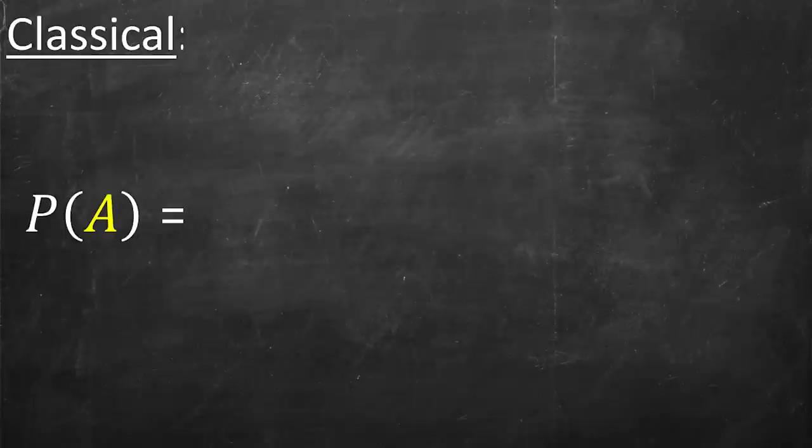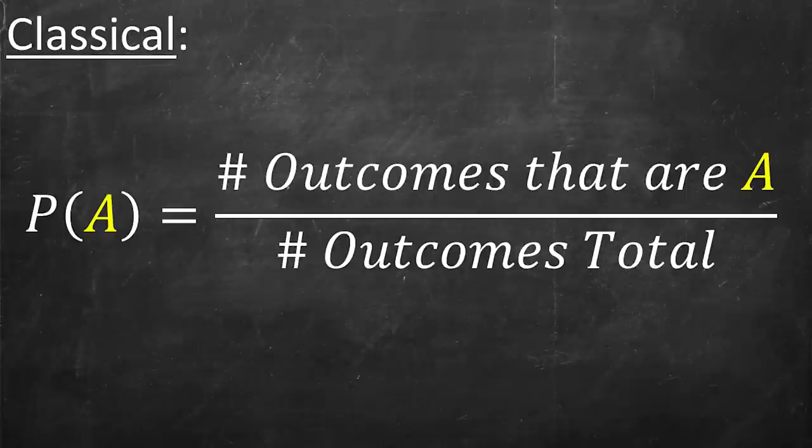More generally, classical probability applies in a scenario where you have a finite number of options that are all equally likely, like drawing an individual card. The probability of a particular event, like drawing a heart, is just the ratio of the total number of times that particular event could occur divided by the total number of possible events — in this case, the total number of cards. Classical probability is great, but it's limited to scenarios where you understand exactly what all the options are, how many there are, and that those options are finite.